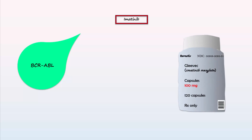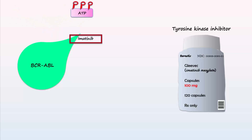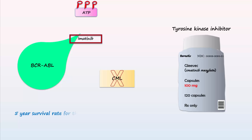Imatinib, marketed as Gleevec, is a tyrosine kinase inhibitor. This drug works by binding to the ATP binding site on BCR-ABL to competitively inhibit the activity of BCR-ABL and greatly reduce cancer cells. The five-year survival rate for those with CML has nearly doubled since imatinib has become available.